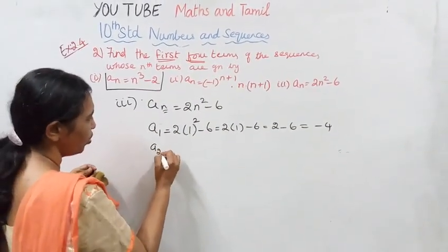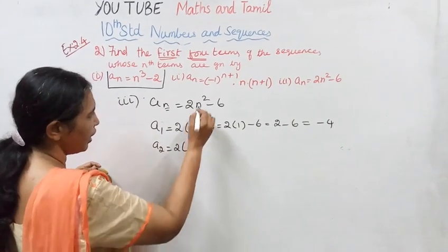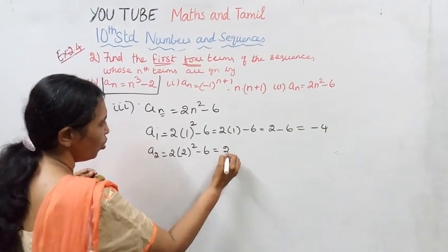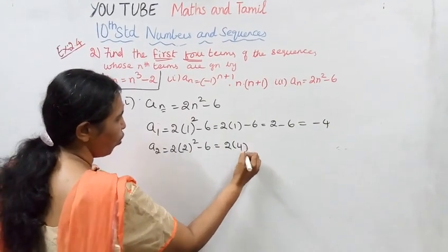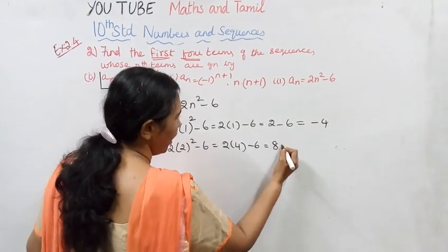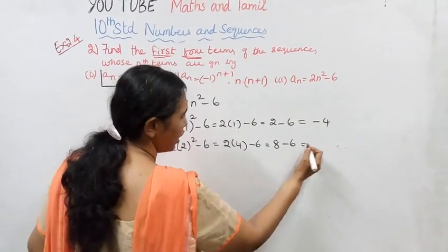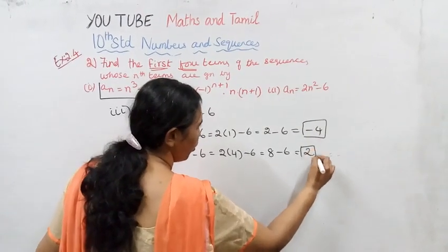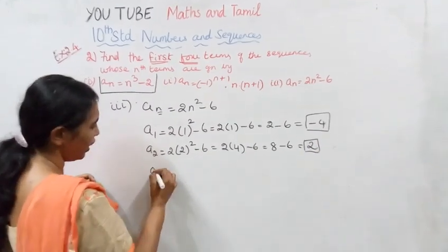a_2: 2 into 2 square equals 2 into 4 equals 8, minus 6 equals 2.